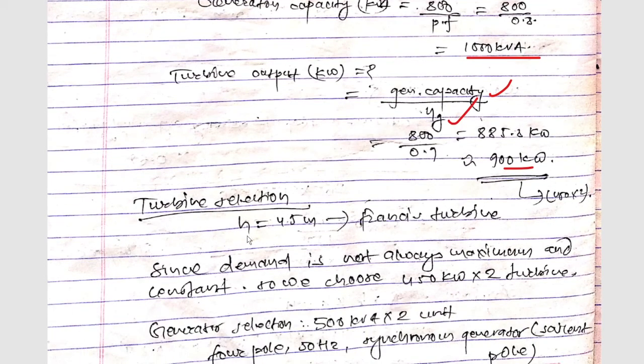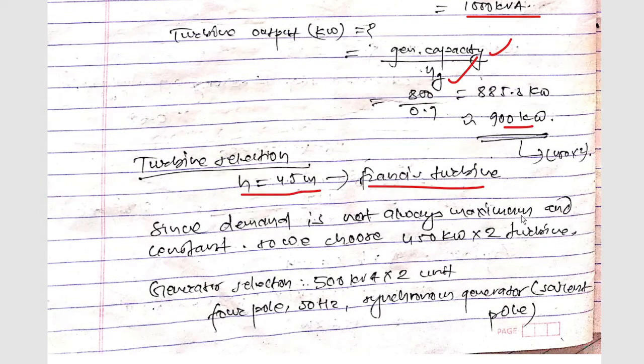So here turbine selection: for head of 45 meter range, the Francis turbine can be selected. And since the demand is not always maximum and constant, so each 450 KW into 2, since this is 900 KW, so two turbines are selected each of 450 KW. And generator selection, so you can select a generator as 500 KW into 2 units and that is a four pole 50 Hertz and that will be synchronous generators or salient pole type.